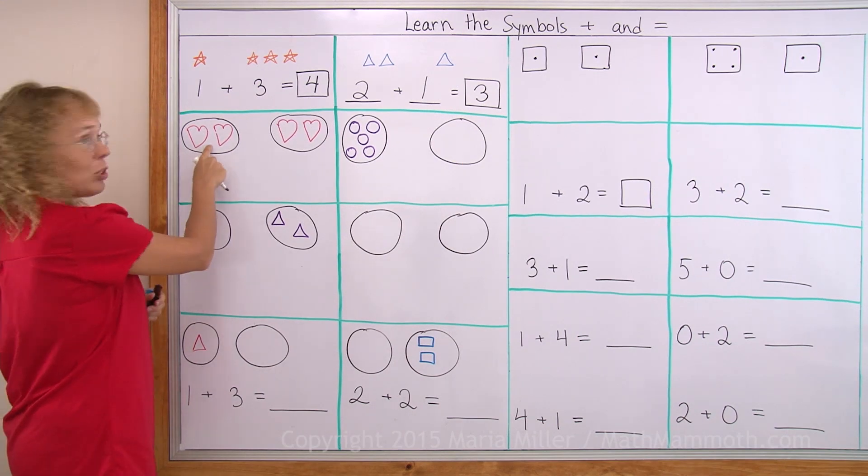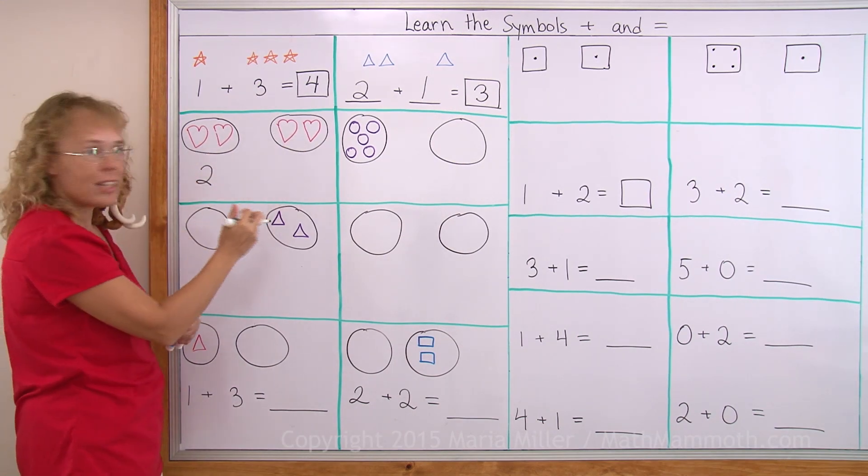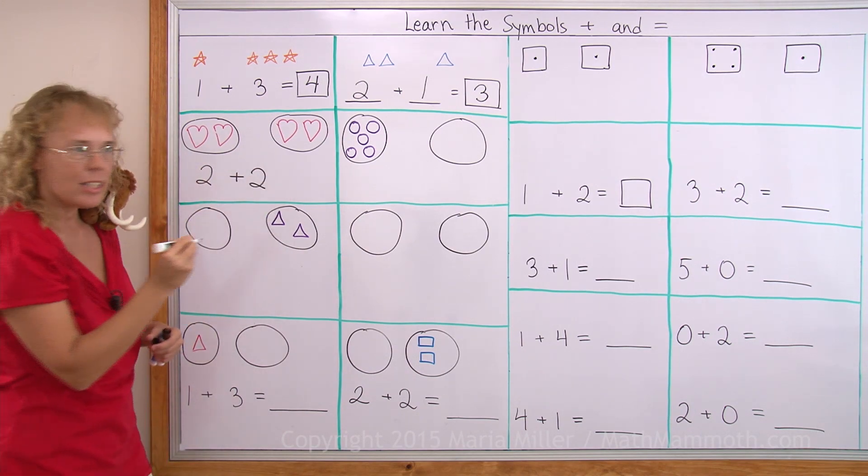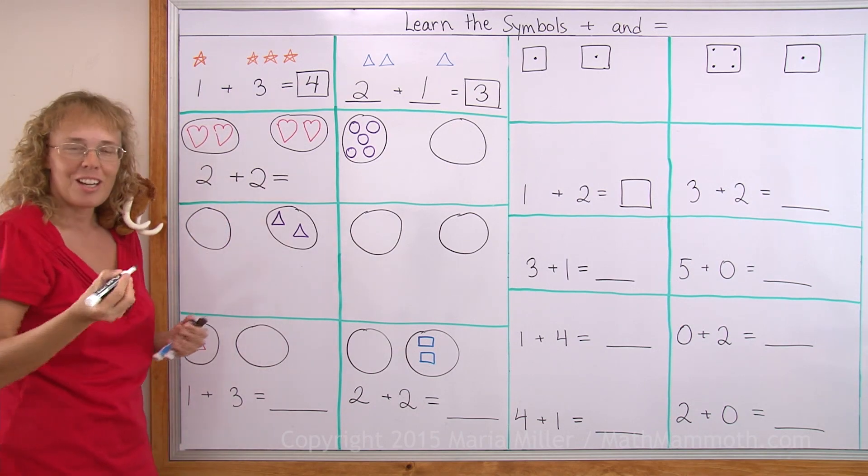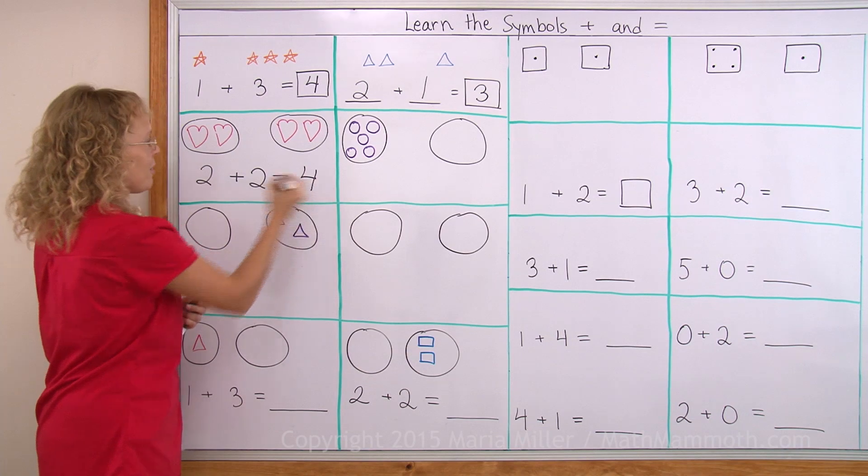Here I have two hearts, right? So I write two and then another two hearts. So I write plus two and then I write equals and then I write the total. How many in total? One, two, three, four. Four in total.